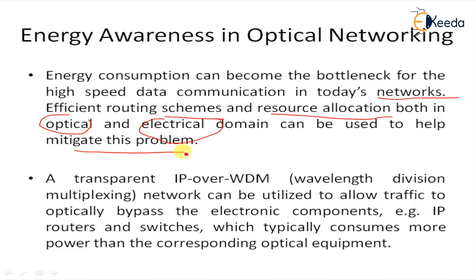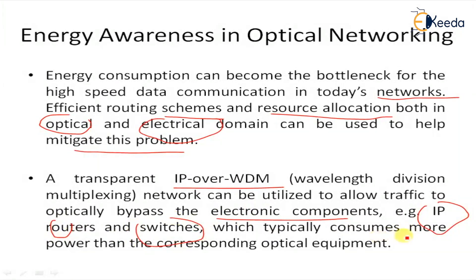In this scenario, energy resource allocation in terms of devices like routers, switches, and other communication devices involves some energy consumption. Awareness about the energies required by different devices in the network is important. A transparent IP over wavelength division multiplexing (WDM) network can be utilized to allow traffic to optically bypass electronic components such as IP routers or switches, which typically consume more power than corresponding optical equipment.